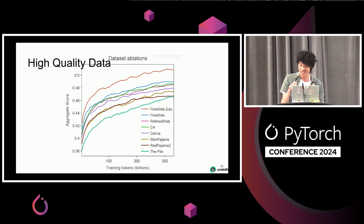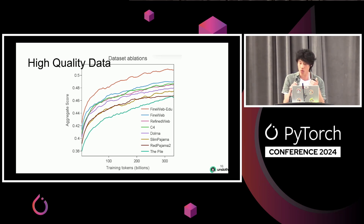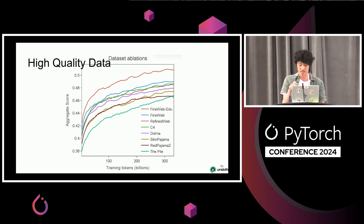The recent trend is high-quality data. The FineWeb dataset — the more high-quality data you can get, the faster the training is. Great work from the Hugging Face team on this. Definitely use high-quality data.